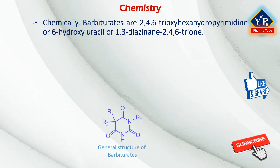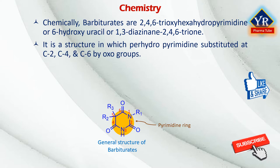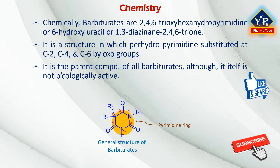Barbiturates are chemically known as 2,4,6-trioxo-hexahydropyrimidine, or 6-hydroxyuracil, or 1,3-diazinane-2,4,6-trione. It is an organic compound based on a pyrimidine heterocyclic skeleton, with numbering the same as in the pyrimidine ring. It is a structure in which perhydropyrimidine is substituted at C2, C4, and C6 by oxo groups. Barbituric acid is the parent compound of all barbiturate drugs, although it itself is not pharmacologically active. It is an odorless powder soluble in water.